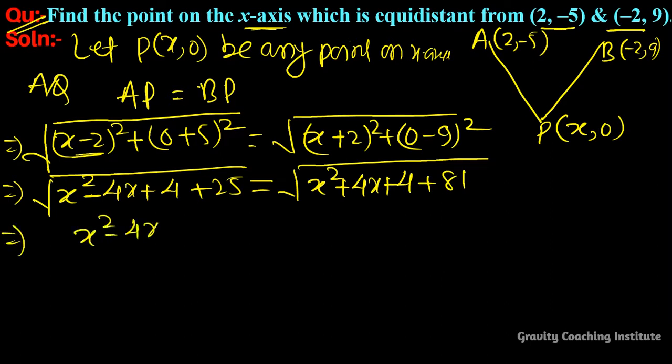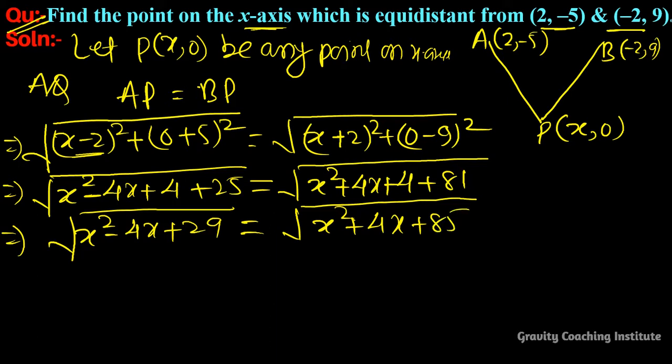And √[x² + 4x + 4 + 81] = √[x² + 4x + 85]. Now we are squaring both sides.